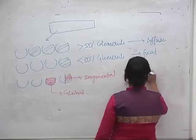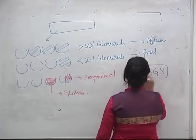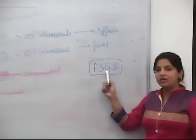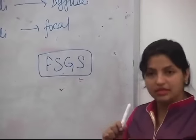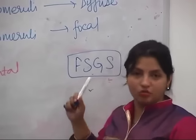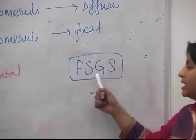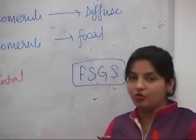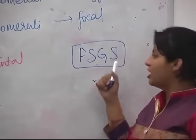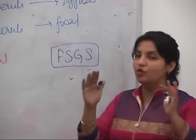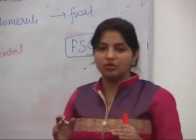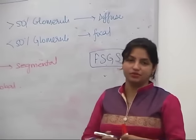If you see a single glomerulus and it is partly or segmentally involved, that is known as segmental. For example, FSGS — focal segmental glomerulosclerosis — means focal: less than 50% of glomeruli are involved, and those which are involved are also segmentally involved. These terminologies — focal, segmental, diffuse, global — should be very clear to you, and they are asked in MCQs.